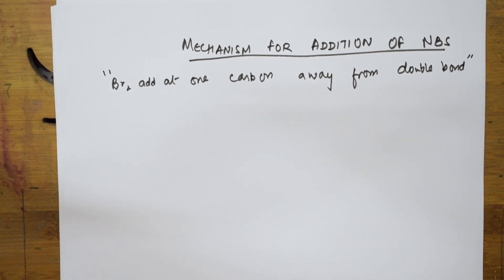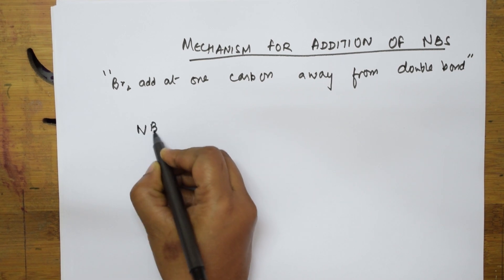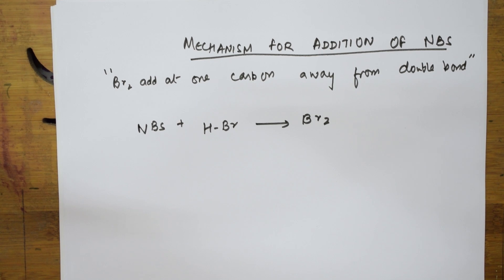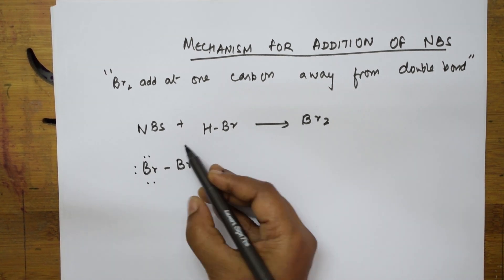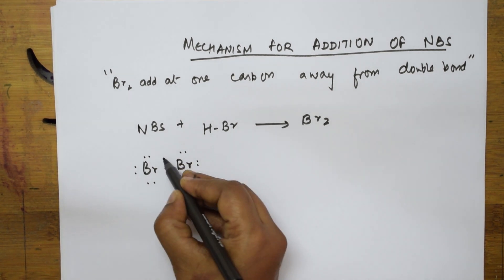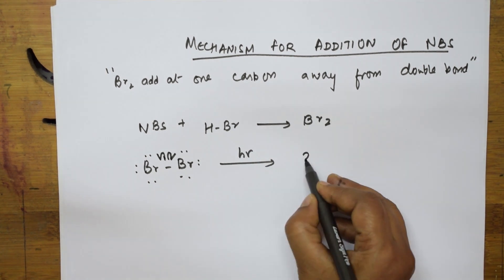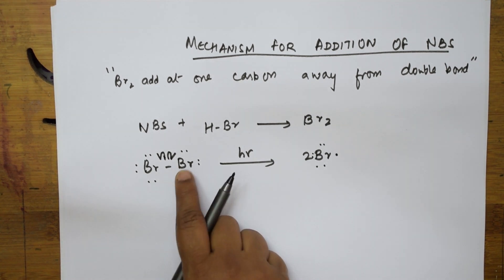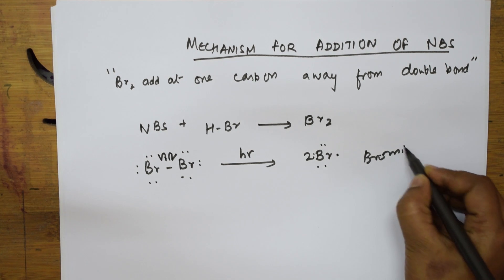In the mechanism: NBS is a supply source of bromine free radicals. First step — NBS combines with HBr, and bromine is released. When NBS combines with HBr, in the presence of hν, there is a homolytic cleavage of the Br-Br bond to form two bromine free radicals. Both electrons are split equally — this is homolytic cleavage — and two bromine free radicals are formed. This is the supply of bromine free radicals.